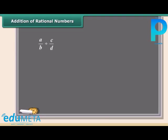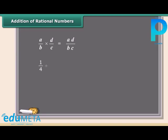Division of rational numbers is again a very simple thing to do. First of all, flip the second number over and make it a reciprocal. After that, do a simple multiplication. Here is an example. We will divide 1 by 4 and 1 by 6. Now we will turn the second fraction upside down so that it becomes a reciprocal. Multiply the first fraction by that reciprocal. This fraction can be further simplified to 3 by 2.